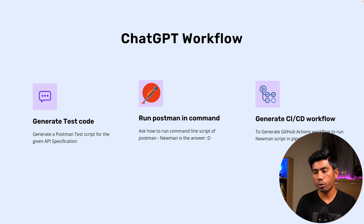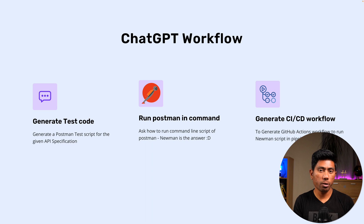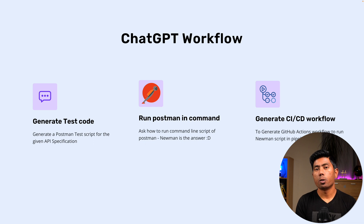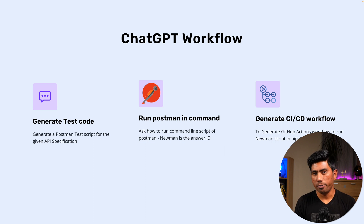The first is to generate test code for the Postman test script by giving the API specification. The second is how to run the Postman test script in a command line interface, because you are essentially going to be running the test from the command line. Once you get this information, you are going to run the tests on the CI/CD pipeline using the command given to you, which is essentially newman as we already know.